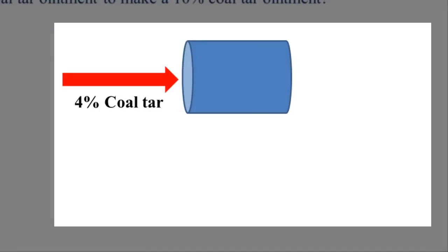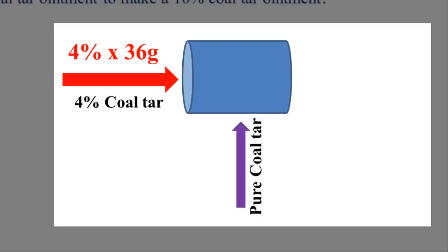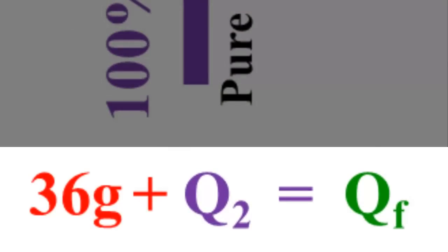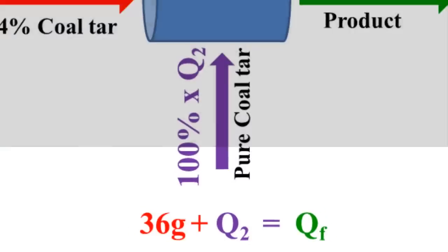Physically, you are starting with 4% times 36 grams. We know those two values, so we can compute the amount of coaltar in the original product: 4/100 × 36. To that we are going to add pure coaltar — which is 100% coaltar — and what we do not know is how much to add so that the final product is 10%. Your 36 grams plus the amount of coaltar added should equal your final quantity.